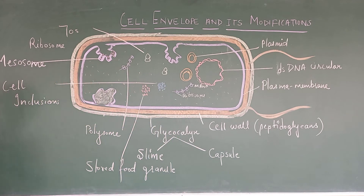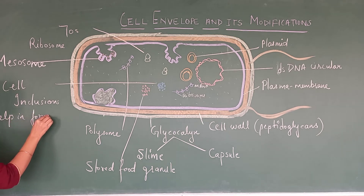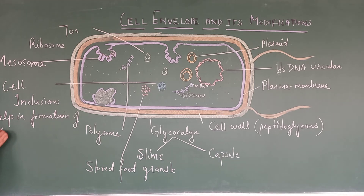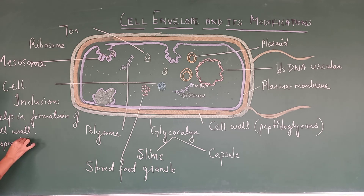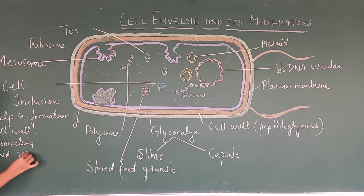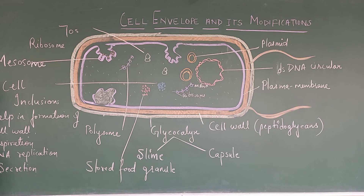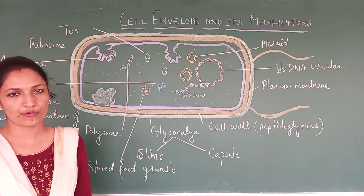What functions do mesosomes perform? First, they help in formation of the cell wall — the material required to form the cell wall is secreted by the mesosome. They help in respiration as they carry the respiratory enzyme. They also help in DNA replication, carrying some special proteins which help in replication. They act as a secretory structure, helping in secretion of various substances, enzymes, and proteins within the cell.